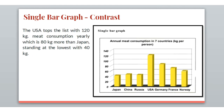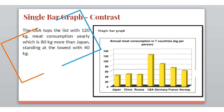Now we will try to understand how to show contrast. The statement goes like this: the USA tops the list with 120 kg meat consumption yearly, which is 80 kg more than Japan standing at the lowest with 40 kg. When analyzing the graph you have to show the contrast of the highest and the lowest, and in this statement we are doing the same. I hope the single bar graph explanation is understood by you.